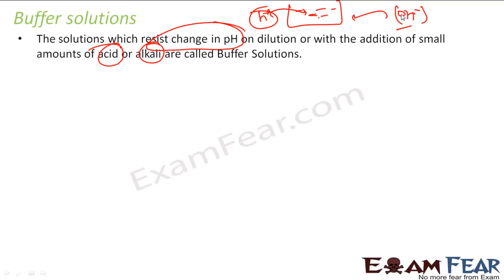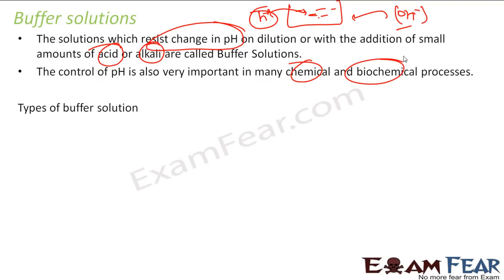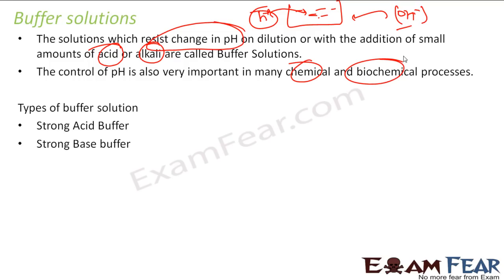So what is the use of buffer solution? It plays a very critical role in our biochemical and chemical processes. If you see blood — blood is an example of a buffer solution. It has a specific pH; even if you try to increase or decrease the H⁺ ion concentration, the pH won't change. There are four kinds: strong acid buffer, strong base buffer, weak acid buffer, and weak base buffer.